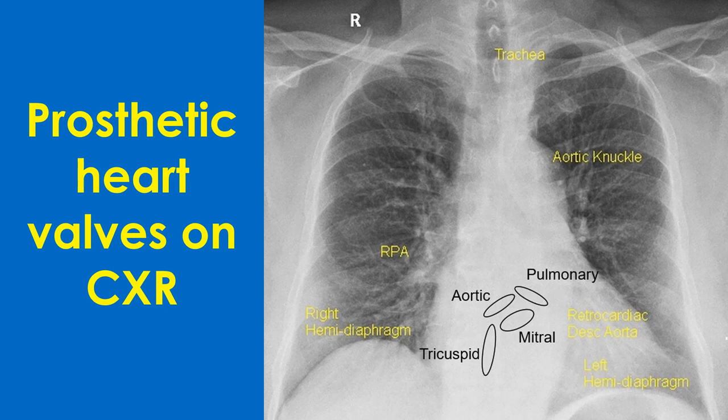A line connecting the pulmonary bay to the right cardiophrenic angle is used to determine the positions of the aortic and mitral valves. The mitral valve is below this line while the aortic valve is above it. The tricuspid valve is a midline structure. The actual positions may vary from case to case, especially with differential enlargement of the cardiac chambers.